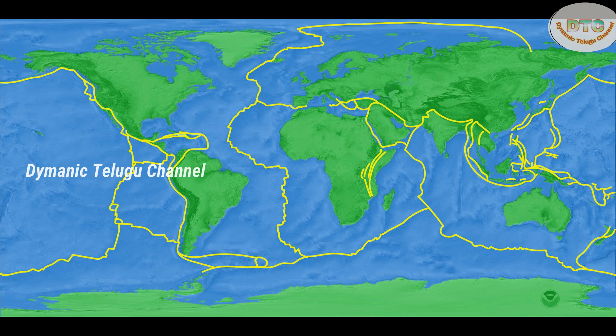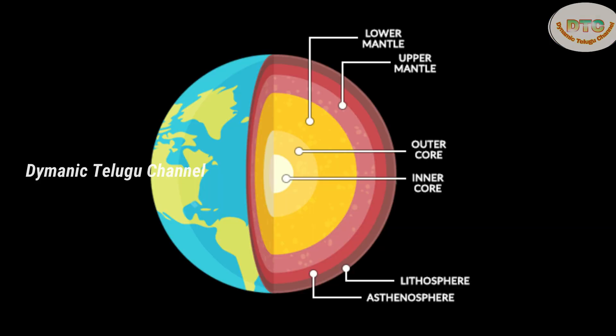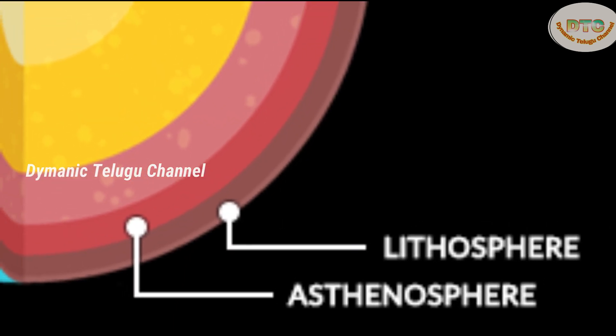The tectonic plates are found all over. The earth has an inner core, outer core, and mantle. The mantle has two layers: lower mantle and upper mantle. There is also the asthenosphere and lithosphere.